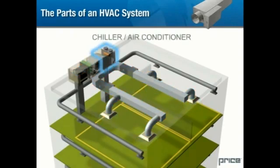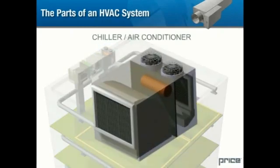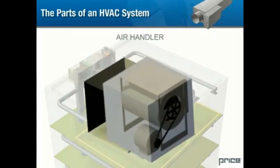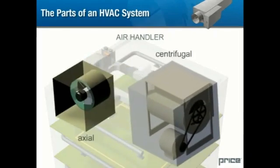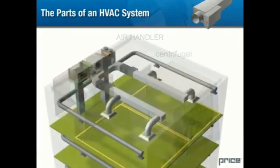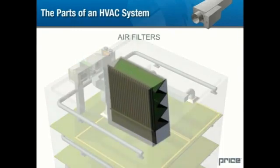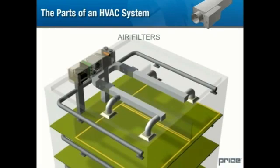The chiller or air conditioner utilizes heat exchangers and circulated fluid or gas to cool the air that is passed through it. The air handler is a fan or blower that moves air throughout the building's ductwork. Axial or centrifugal fan types may be found in the air handler. Depending on the requirements of the occupants and the activities in the building, various grades of air filters are used in the system. General purpose air filters will be included in the air handler itself, while more sophisticated filters, such as HEPA filters, may be used in the downstream ductwork.